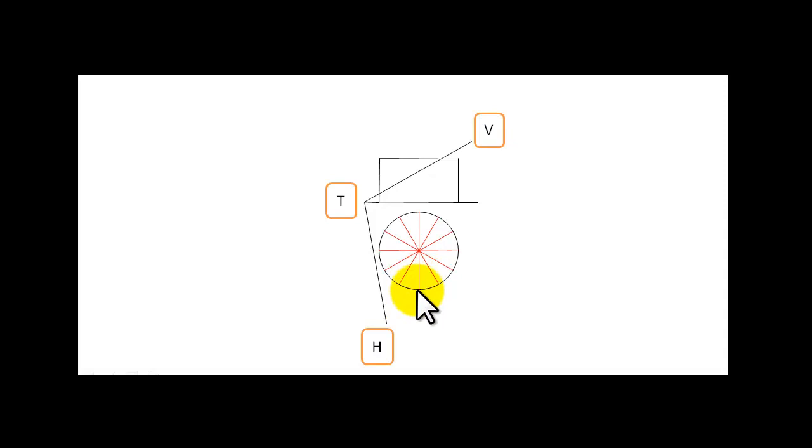So we will start off with this point here at the bottom. We have this point. So we will bring this point up parallel to Vt. We will bring it up to Vt. By doing this, you get a height line. So we will bring this line across.